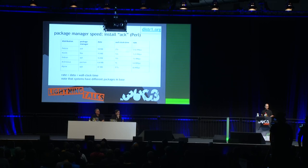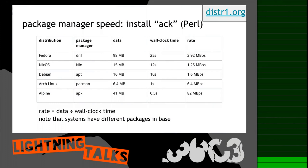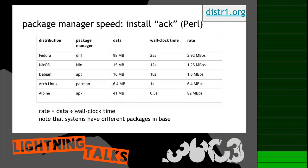Hello, good morning. My name is Michael and I think Linux distributions are too slow. I've measured the time it takes to install a small Perl script on major Linux distributions, and I think it's unacceptable that on Fedora you wait 25 seconds to install a couple of kilobytes of program code. All widely-used package formats are archives: in Debian you have tar archives, in Red Hat it's CPIO archives. A package manager downloads global metadata, resolves dependencies, downloads archives, extracts them, and configures the software.